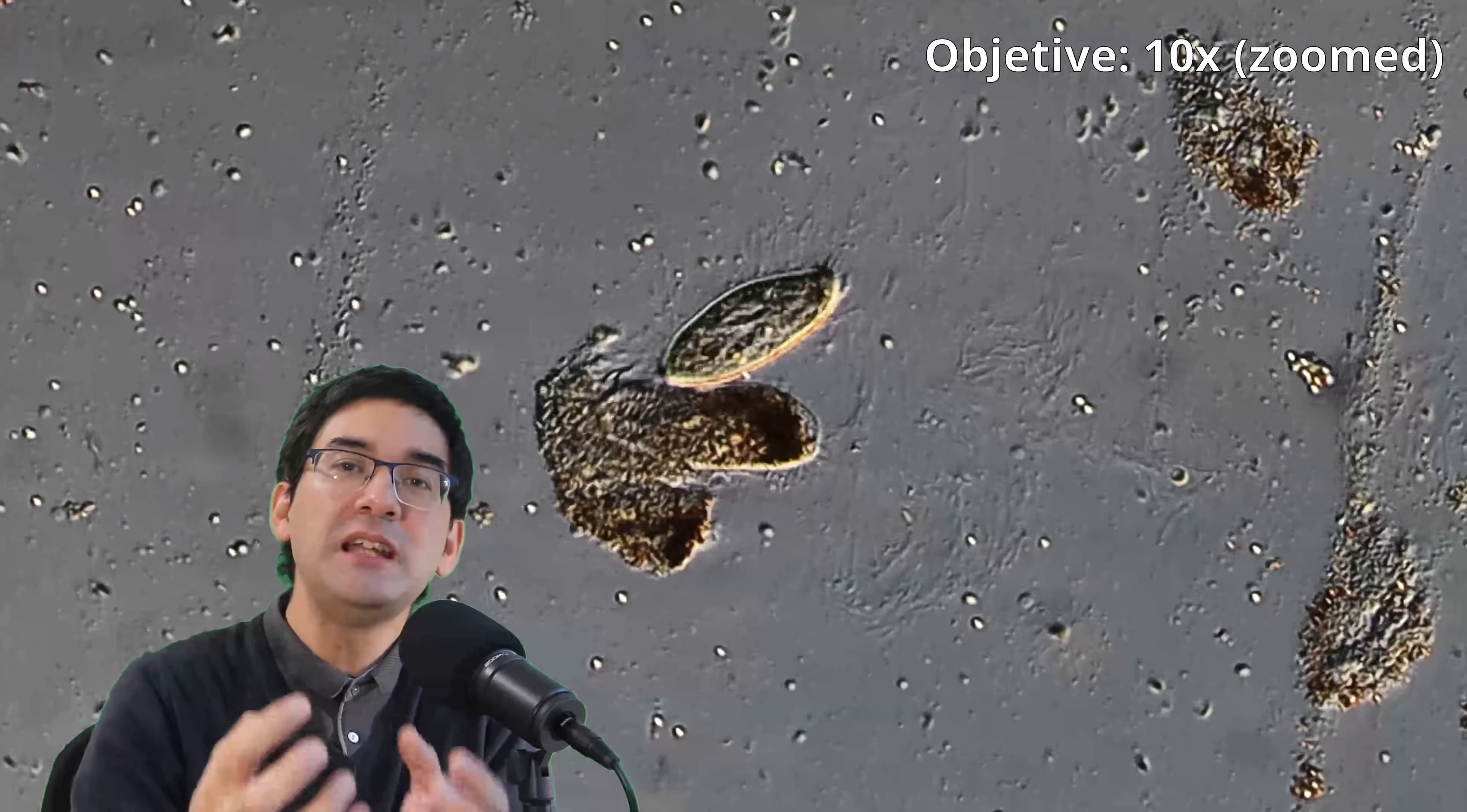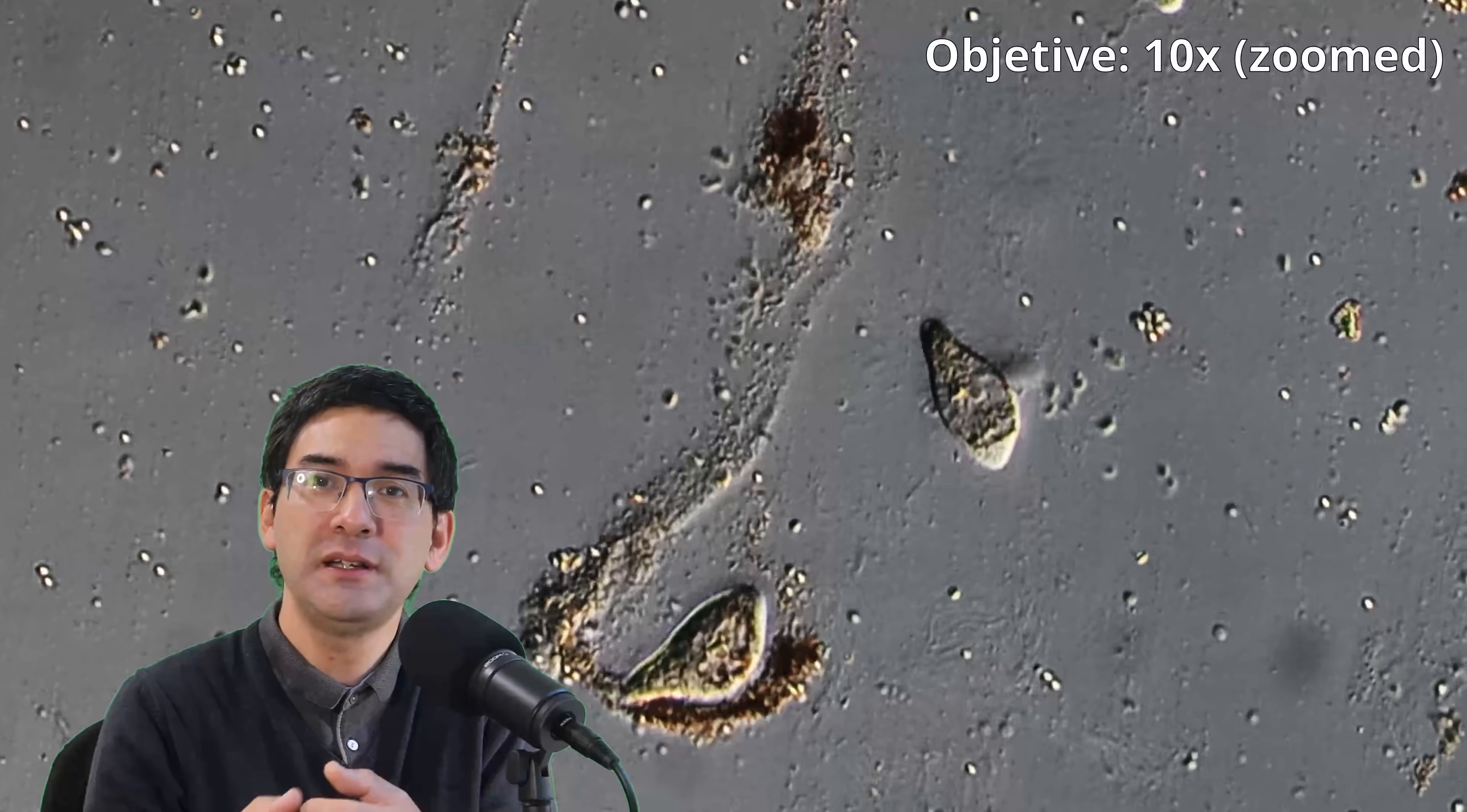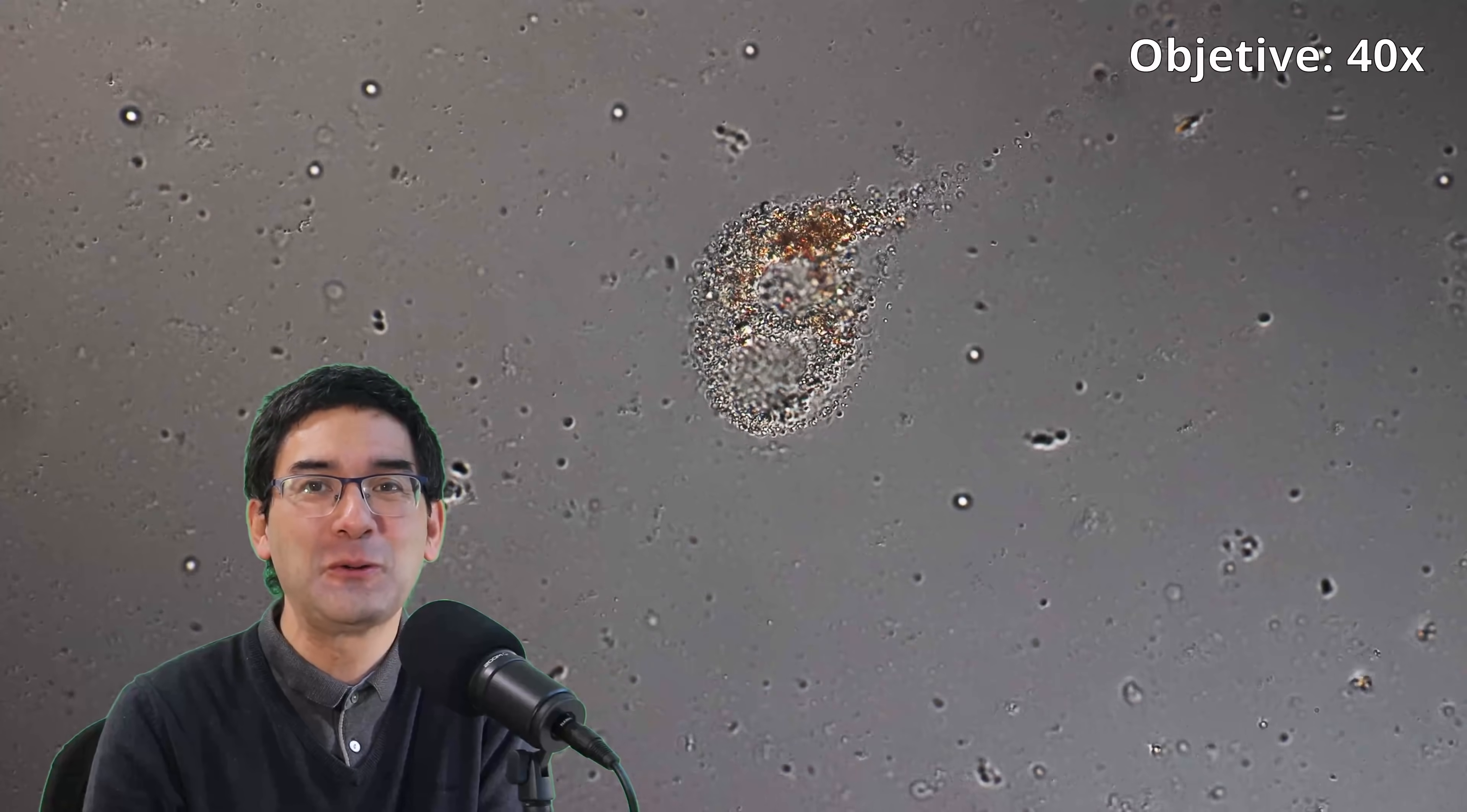If the proteins denature and change their shape, then there is not going to be a reaction because the antibodies cannot bind. So the buffer solution here has to be one that is able to release the individual proteins without actually damaging them. This is the reason why finding the correct buffer solution, of course, is not quite easy.